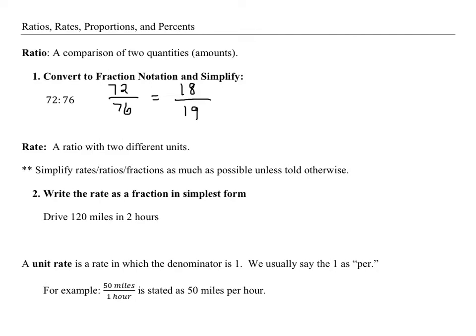A lot of times we'll say 72 to 76, using the word 'to' in between to compare them. Now a rate is a ratio with two different units, and we're going to try to simplify as much as possible unless we're told don't simplify. If we want to write it as a rate in simplest form, we're driving 120 miles in 2 hours. I'm going to divide both of them by 2 so I get 60 miles in 1 hour. If I were asked for a unit rate, we would say this is 60 miles per hour. Per means 1, so that's our unit rate.